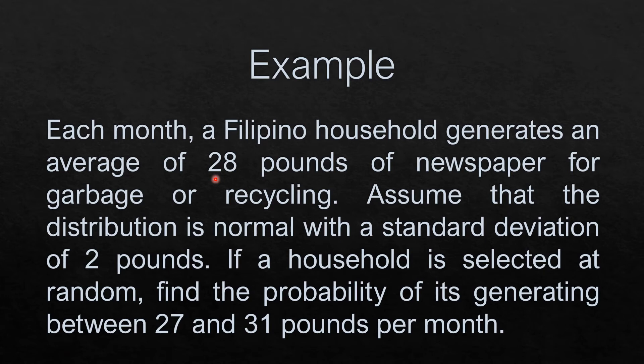To give you an example, each month a Filipino household generates an average of 28 pounds of newspaper for garbage or recycling. Assume the distribution is normal with a standard deviation of 2 pounds. If a household is selected at random, find the probability of its generating between 27 and 31 pounds per month.